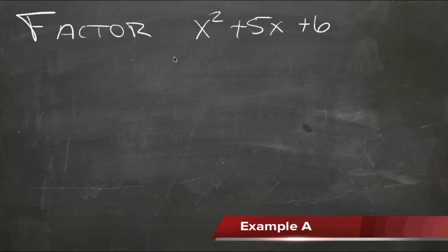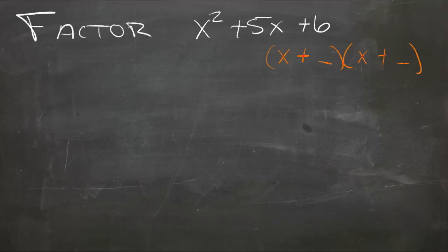In this lesson we're working on factoring trinomials. What we're looking for is which two binomials multiply together to be this trinomial. We're going to have x plus something times x plus something else, and we want it to FOIL out to be this expression right here, x squared plus 5x plus 6.